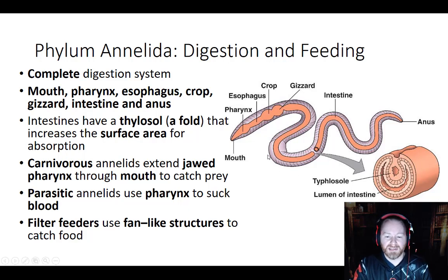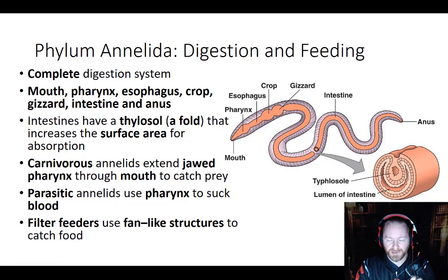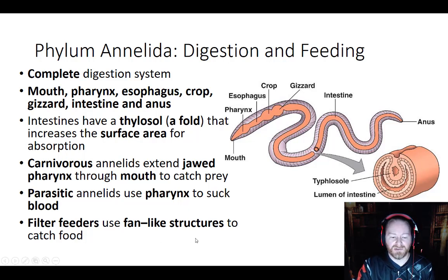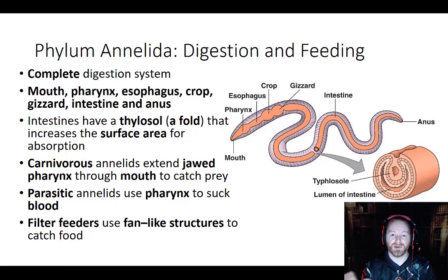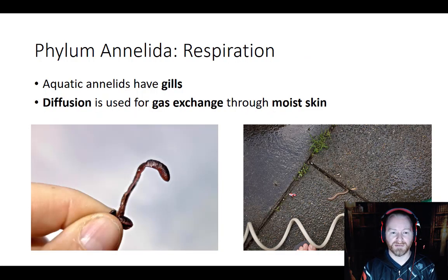There are some carnivorous annelids that have jaws — very similar to those found in some roundworms — which move out through the pharynx and mouth to catch prey and pull it back in. There are also some parasitic annelids that use the pharynx to suck blood, though not a large number. And there are filter-feeding annelids that use a fan-like structure made of setae, which they extend into the water; as water passes, food particles get stuck in it, they pull it in, clean it off, and digest it. So there's a wide variety of feeding tactics within Phylum Annelida.